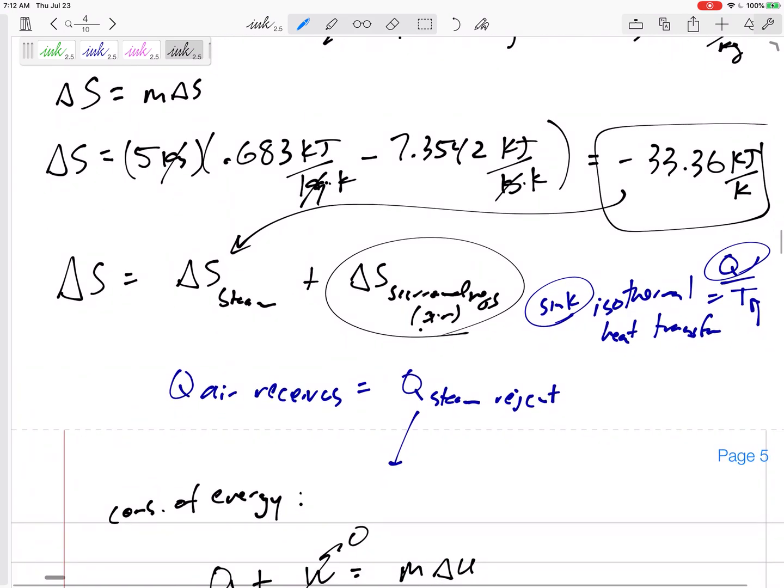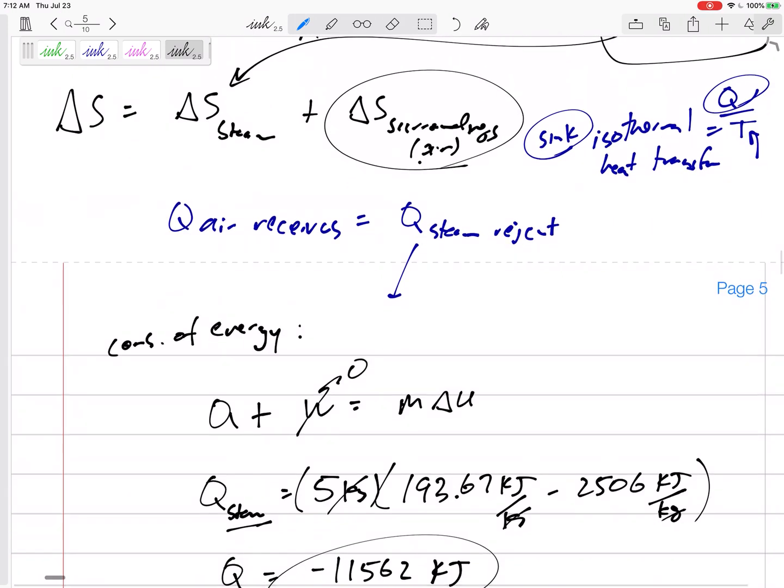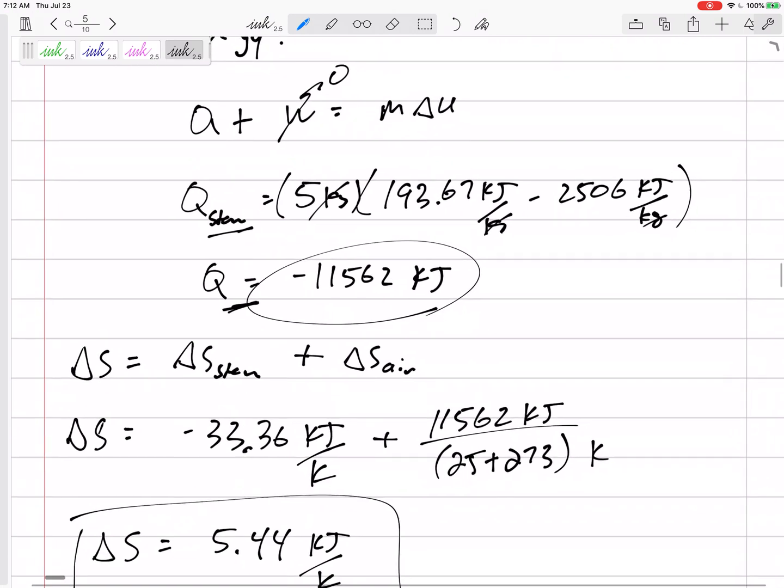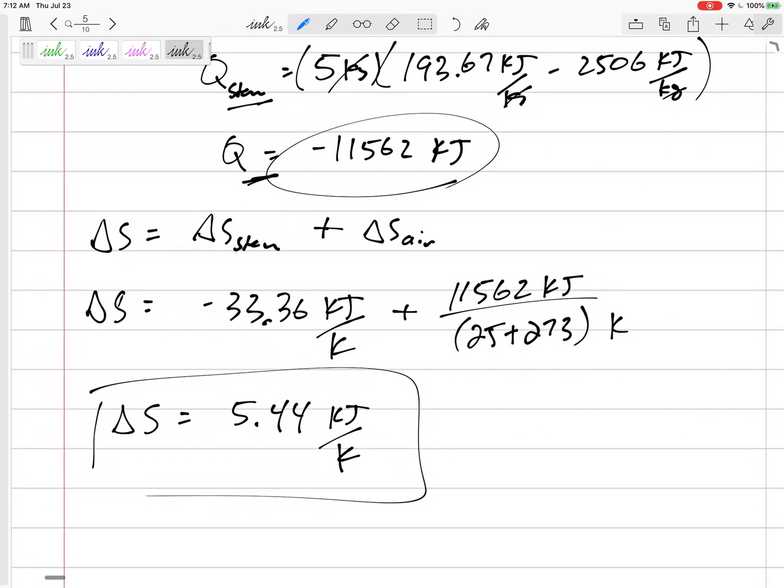And the delta S total is the delta S of the steam plus delta S of the air. The air was an isothermal sink: Q over T. I needed to find the Q, found the Q from conservation of energy: m delta U. Whoo! Hopefully you'll learn some things there that maybe you won't get stuck on the test.